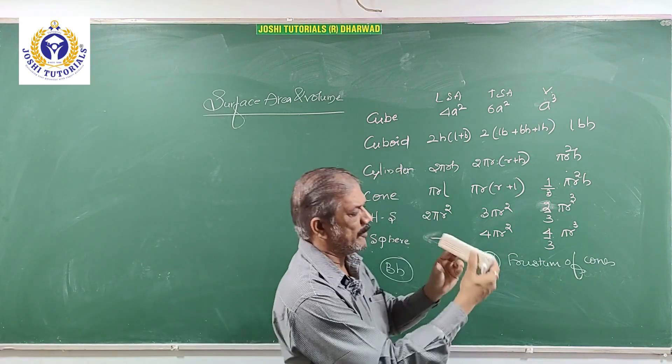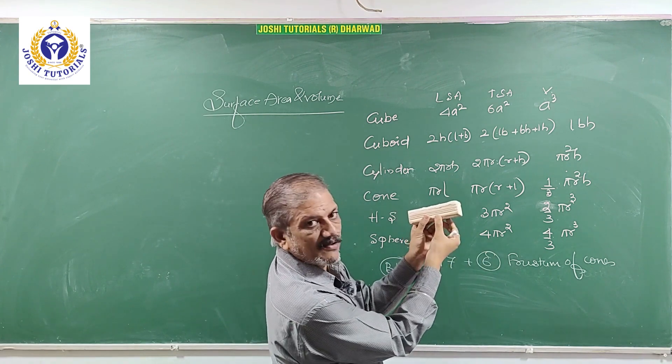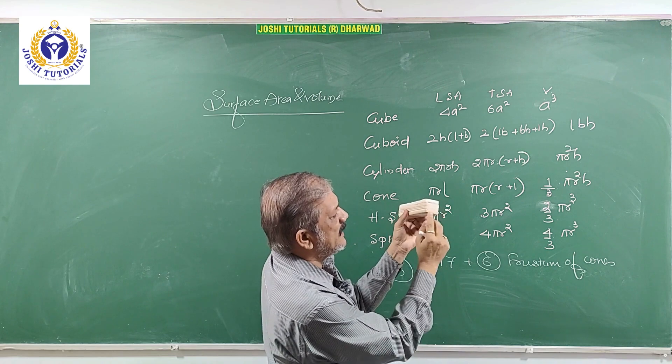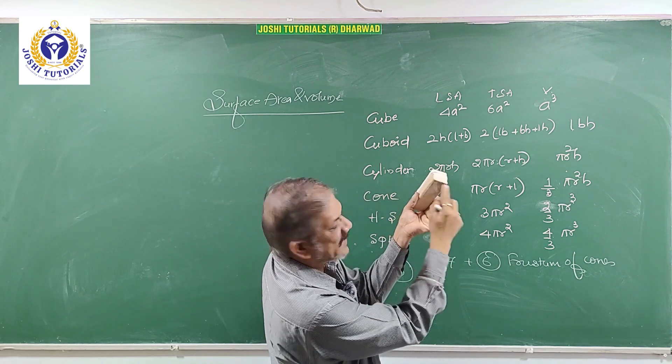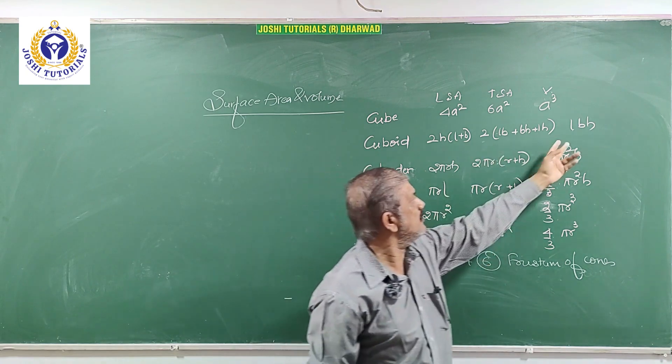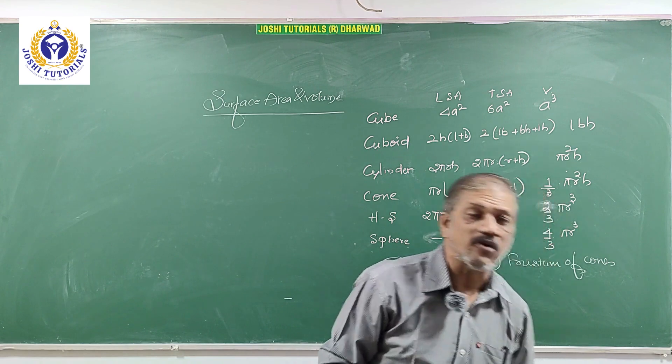For example, you want cuboid, base area. Base is here, length, height, breadth. So length into breadth is base area, height is H. That is called LBH. In this way you can remember what you call formula.